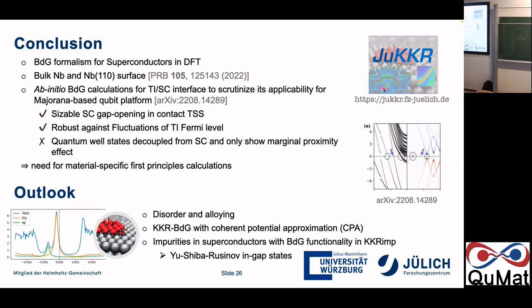Follow-up question: There's a lot of charge transfer from niobium to the TI — is that a good thing or a bad thing? Response: It depends on where you start from. If you start with a topological insulator whose Fermi level lies in the valence band, then it can actually be a good thing, just pulling it up into the bulk band gap. You can think about functionalizing this effect.